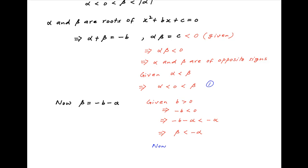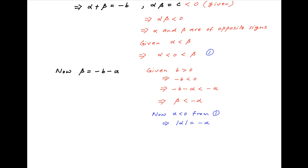From Result 1, alpha is negative, and therefore the modulus of alpha equals minus alpha. Therefore, the result beta less than minus alpha can also be written as beta less than modulus of alpha. Let's call this Result 2.